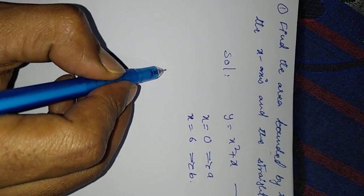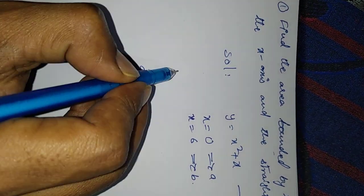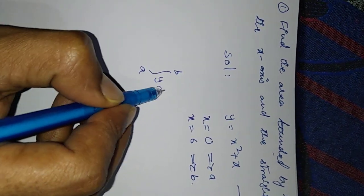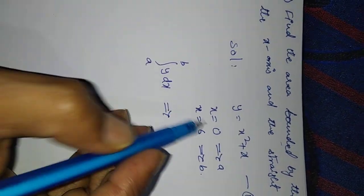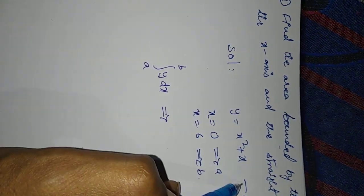The formula is integration a to b of y dx. That is equal to substituting y, which means equation 1, into this formula.